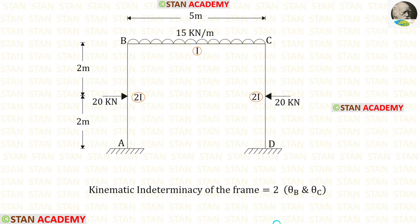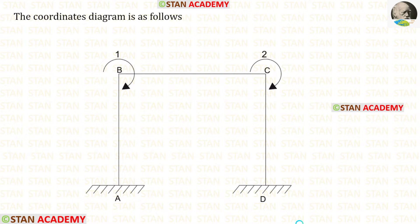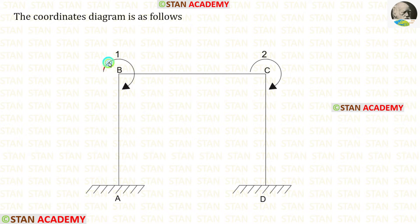Now let us find the kinematic indeterminacy of the frame. This frame is symmetrical with respect to dimensions and loading, so there will be no sway. We will have slopes only at joints B and C. So the kinematic indeterminacy of the frame is 2 — θB at joint B and θC at joint C. Now let us make the coordinates diagram. There are two coordinates, located at joints B and C, since only these joints have slope. The coordinates indicate the movement, and movements should be placed in the clockwise direction.